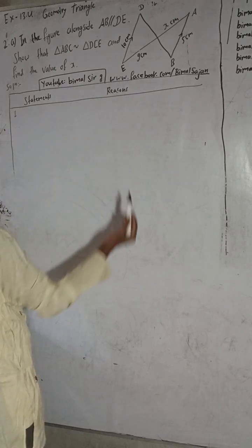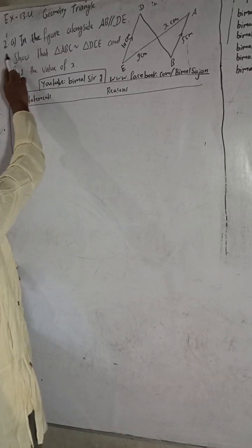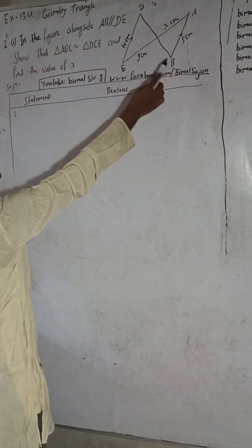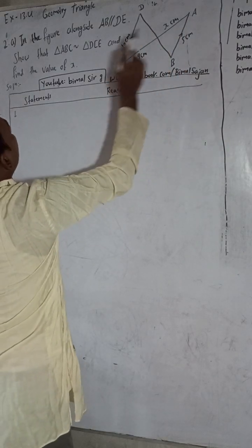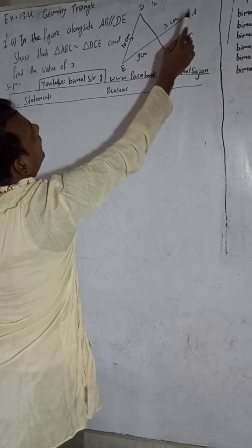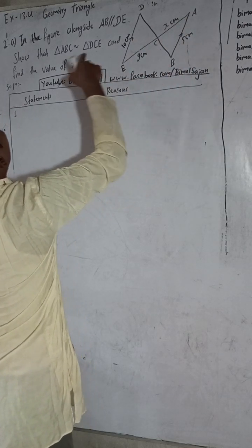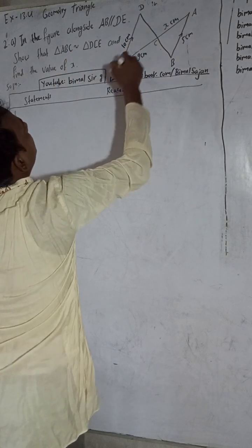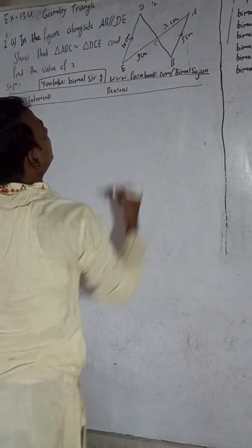Question 2A: In the figure alongside, AB is parallel to DE. Triangle ABC is similar to triangle DCE. We have to find the value of X.